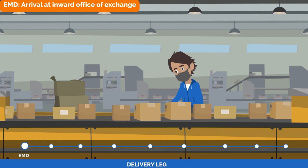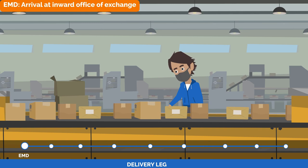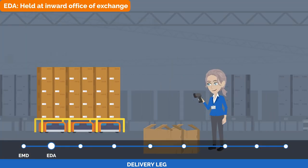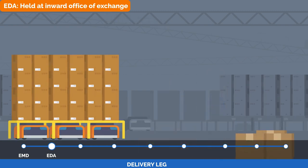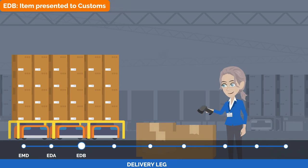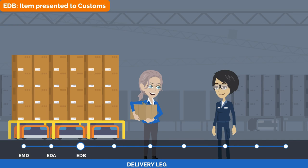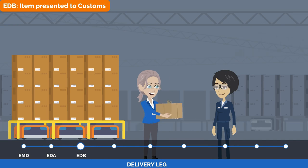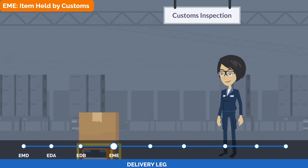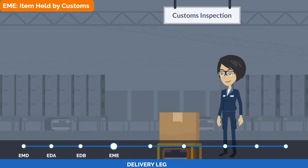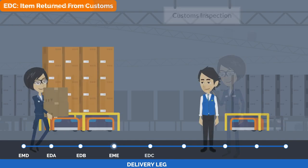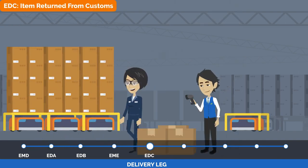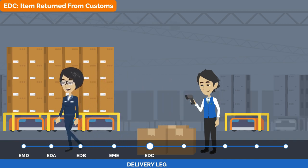The EMD event indicates the acceptance of the EMS item by the destination post. Items that need to be repaired are held by the post and receive the scan event EDA, which means held at the Inward Office of Exchange. After items have been successfully repaired, they are returned to the pipeline. Any EMS items that need to be presented for inspection by import customs will receive the EDB scanning event and will be handed over to customs. If customs decides to hold any EMS items for further investigation or to define duties to be paid, these items will receive the EME event — item held by customs. All items returned from customs will receive the scanning event EDC — item returned from customs.